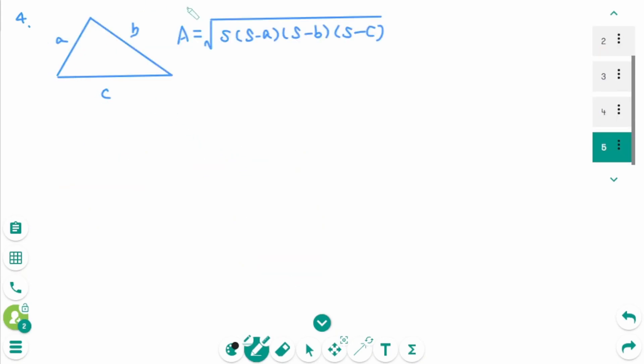Number 4, this time we use Heron's formula. If S is A plus B plus C over 2, there is a triangle with side lengths of 4, 13 and 15.